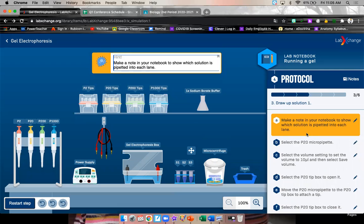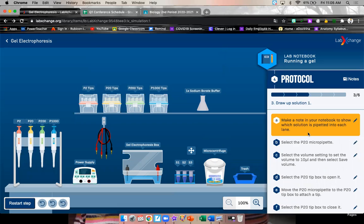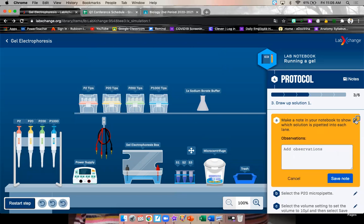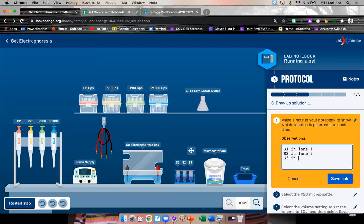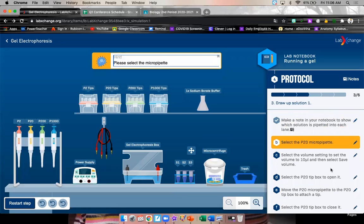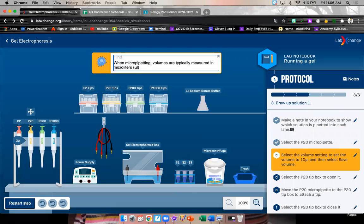Make a note in your notebook to show which solution is pipette into each lane. We didn't do that yet. I don't know why it sounds to it first, but see this little pencil. So you can write whatever you feel like writing. S1 in lane 1. S2 in lane 2. S3 in lane 3 is what we plan on doing. Select the P20 micropipette that's over here. That's the yellow one. So it says P20 right here.